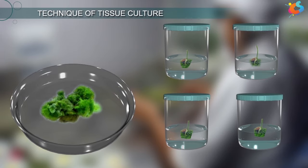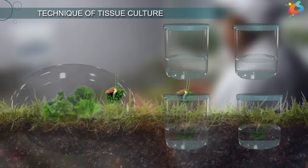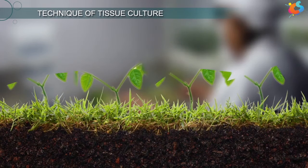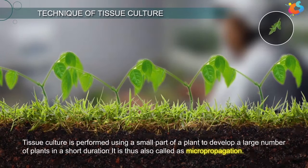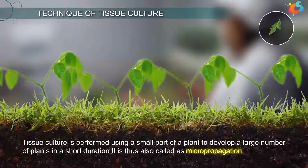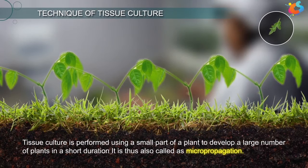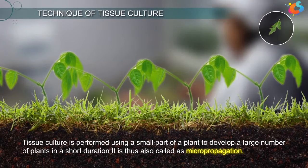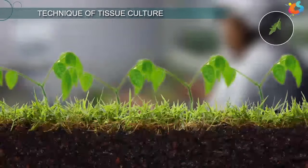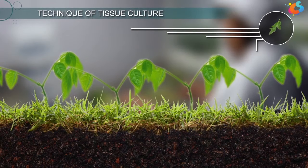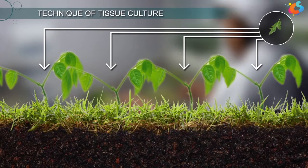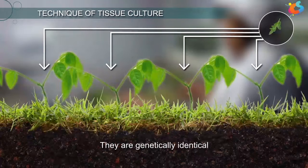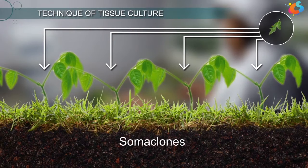Finally, the developed plantlets are transplanted to the soil for normal growth. Tissue culture is performed using a small part of a plant to develop a large number of plants in a short duration. It is thus also called micropropagation. As all these plants are developed from the same part of the parent plant, they are genetically identical and called somaclones.